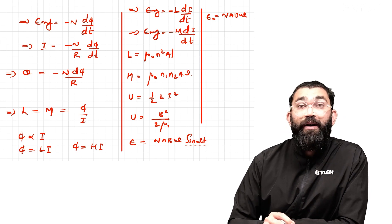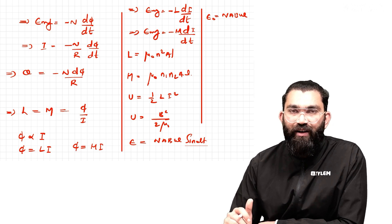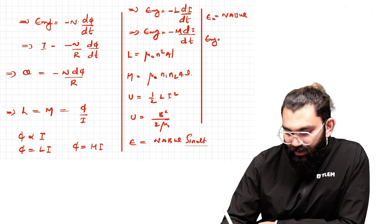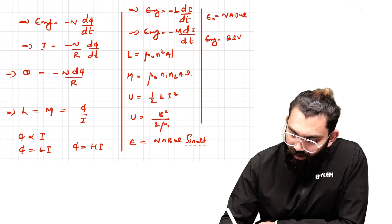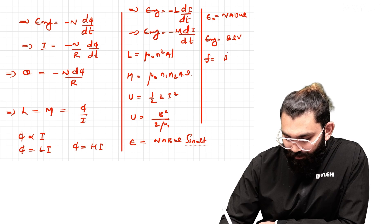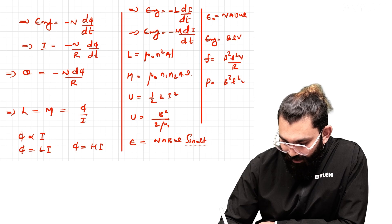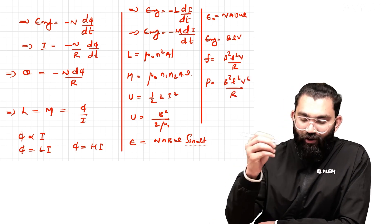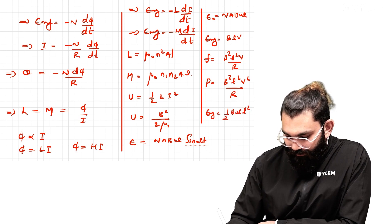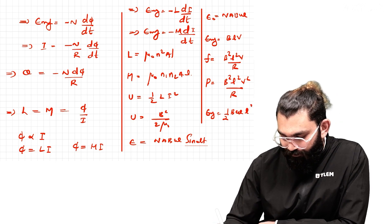The additional topic is motional EMF. Motional EMF is the basic idea — it is called L, the length of the conductor, into v cross B.